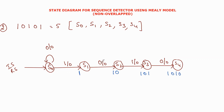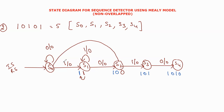For S1: x equal to 0 goes to S2, and x equal to 1 goes to self-state S1 with y equal to 0. For S2: x equal to 1 goes to S3. We check x equal to 0 - comparing the first two bits and last two bits, they do not match, so we go to the same reset state. So x equal to 0, y equal to 0.